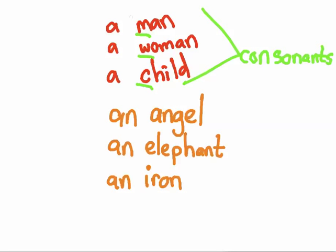All of these words start with 'a' because a man, a woman, and a child all start with consonants. Whereas an angel, an elephant, and an iron all start with vowels.